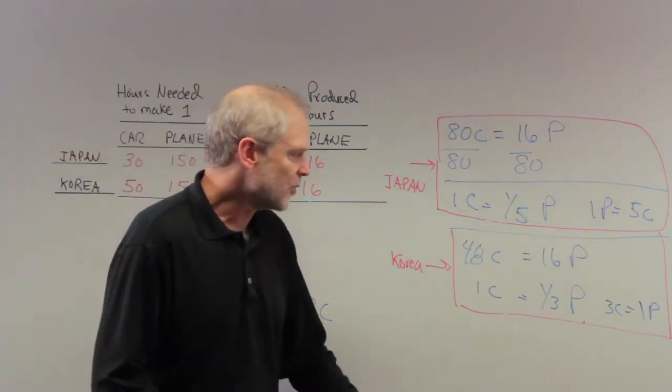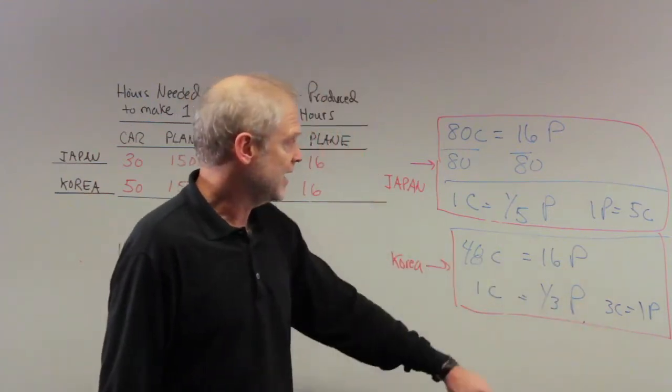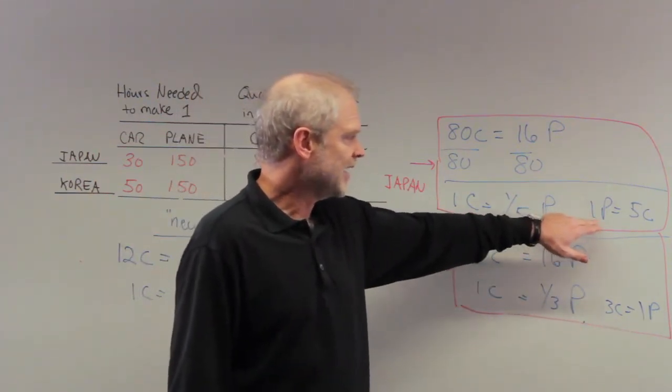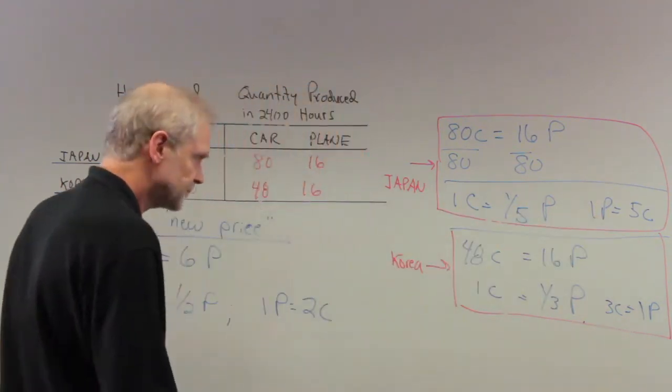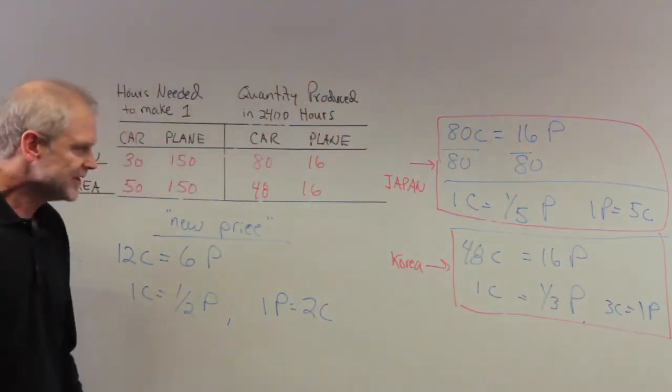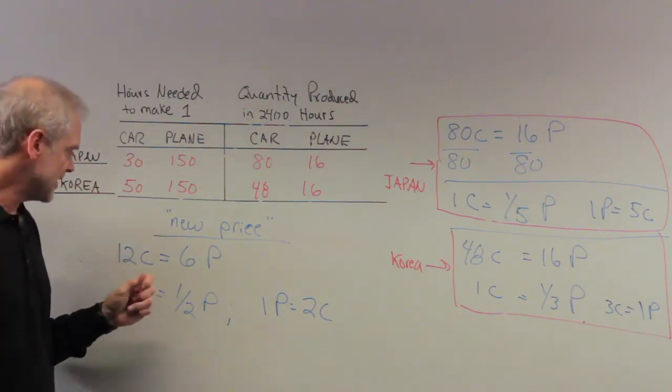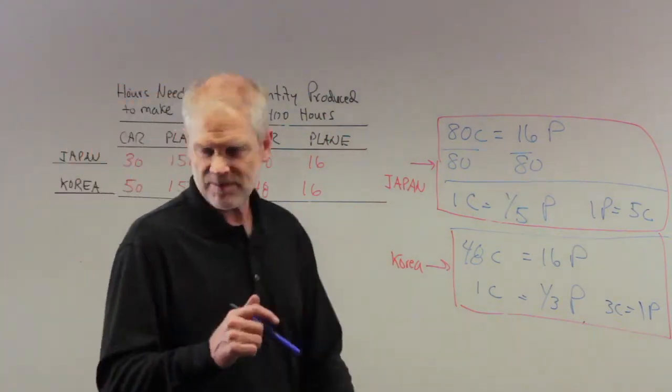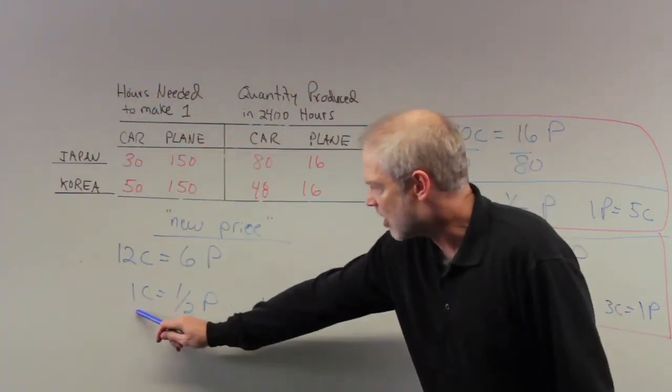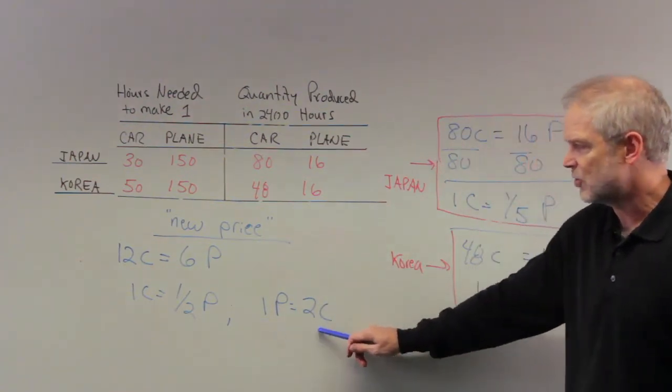We know for Korea that one plane can buy three cars in Korea. And we know in Japan that one plane can buy five cars. So, they're now telling us the trading prices, this new price, is that 12 cars are equal to six planes. What's that mean? That means that one car is equal to half a plane, or it means that one plane is equal to two cars.